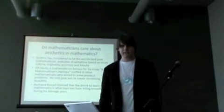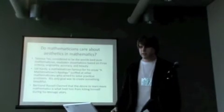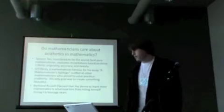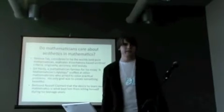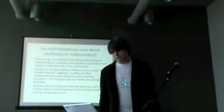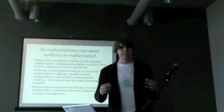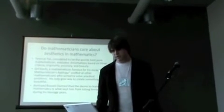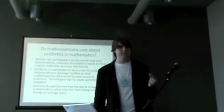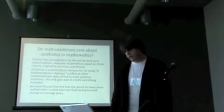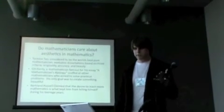Okay, so do mathematicians care about mathematical beauty? Does it even matter to them? Terence Tao, who many consider to be the world's best pure mathematician, he evaluates his students' dissertations based on three criteria. The first one, originality, that's the creative aspect of mathematics. The second one is accuracy. You need to get the right answer. And the third one is beauty. G.H. Hardy, he wrote an essay called A Mathematician's Apology where he defends a pure mathematician. He defends his life and what he accomplished. He said even though he had no intention of creating something useful, he thought that mathematics is important just for the purpose of mathematics itself. Bertrand Russell, who had the quote earlier, claimed that the desire to learn more mathematics, mathematical beauty, kept him from killing himself while he was a teenager.